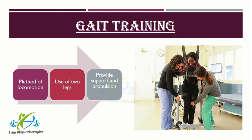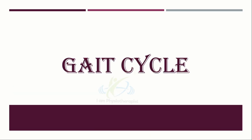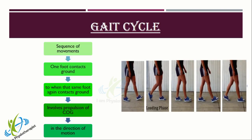Gait Training is a method of locomotion involving the use of the two legs alternately to provide both support and propulsion. A gait cycle is the sequence of events or movements during locomotion in which one foot contacts the ground to when that same foot again contacts the ground, and involves propulsion of the center of gravity in the direction of motion.